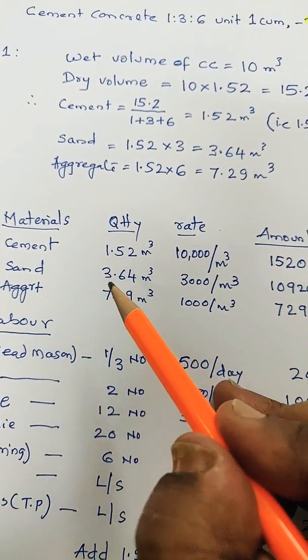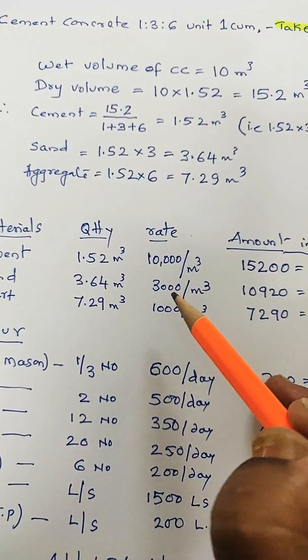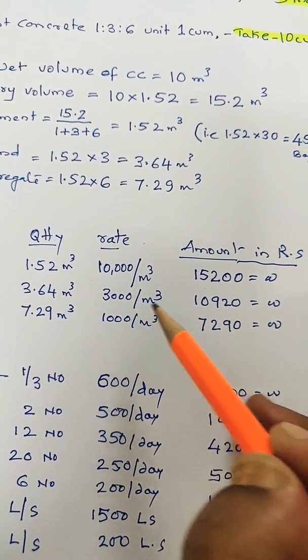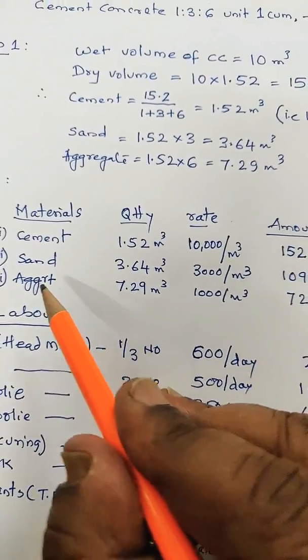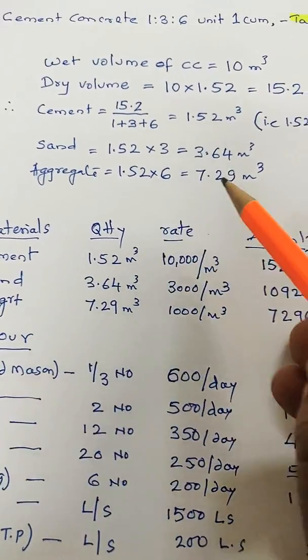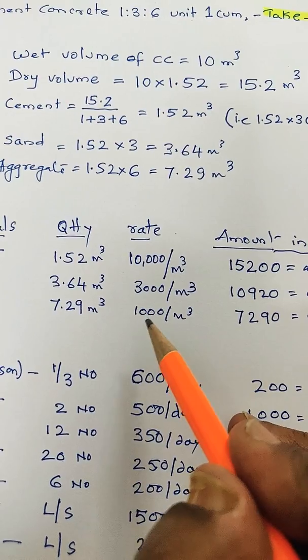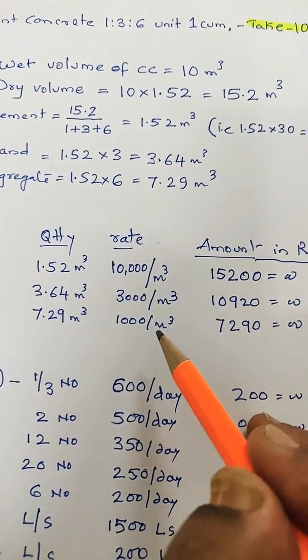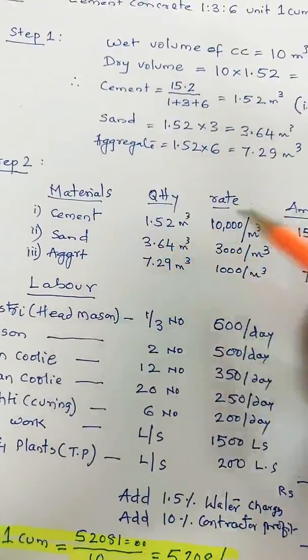Then sand: 3.64 cubic meters, 3,000 rupees per cubic meter is the present market rate, so it comes out to 10,920 rupees. Similarly aggregate: 7.29 cubic meters times 1,000 per cubic meter, we get 7,290 rupees. This is the materials cost.